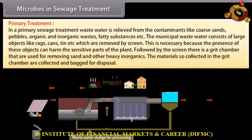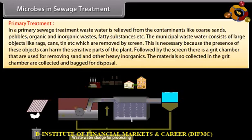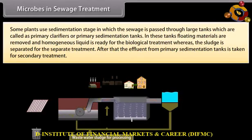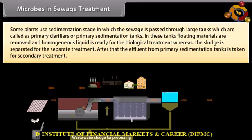The presence of these objects can harm the sensitive parts of the plant. Followed by the screen, there is a grit chamber used for removing sand and other heavy inorganics. The materials collected in the grit chamber are bagged for disposal. Some plants use a sedimentation stage in which sewage is passed through large tanks called primary clarifiers or primary sedimentation tanks. In these tanks, floating materials are removed and a homogeneous liquid is ready for biological treatment, while the sludge is separated for separate treatment. The effluent from primary sedimentation tanks is then taken for secondary treatment.